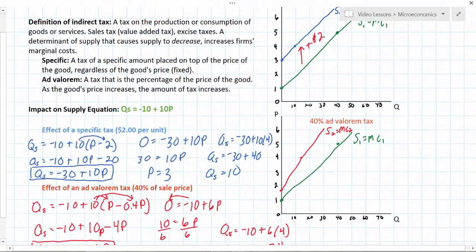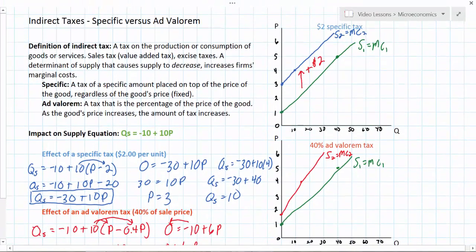As you can see the gradient has increased. Whatever the price is the supply curve will be 40% higher than it was originally. So we can see this is shifted up by 40% whereas when there's a specific tax the supply curve shifts up by a constant amount of $2.